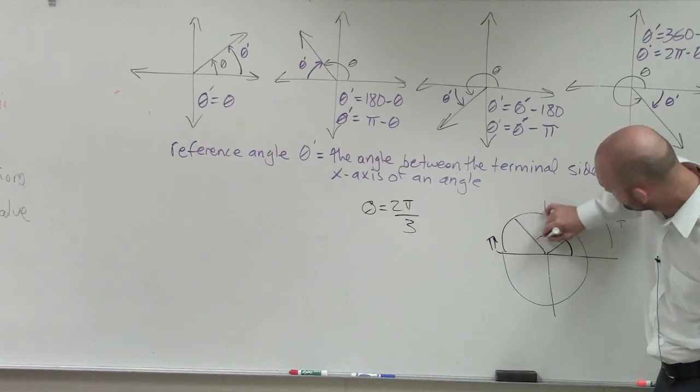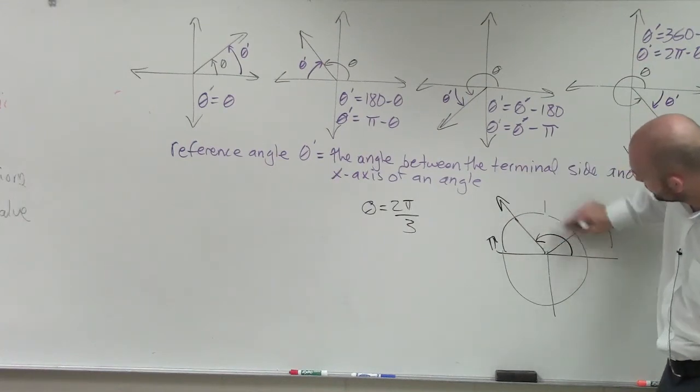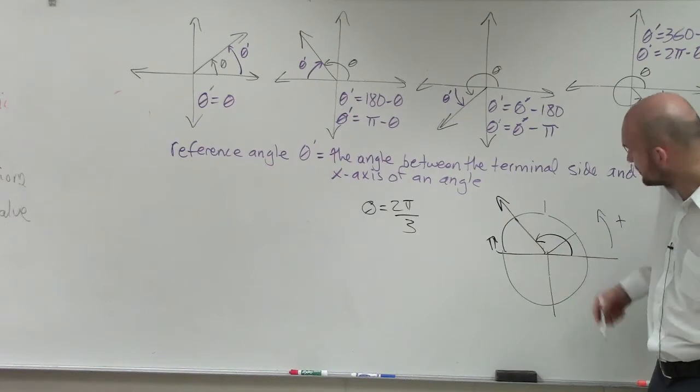And therefore, I know that my angle is going to go from there to there, right? Because that would be 1 third, that would be 2 thirds, that would be 3 thirds. So that's 2 thirds π.